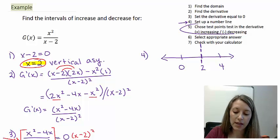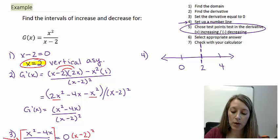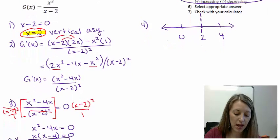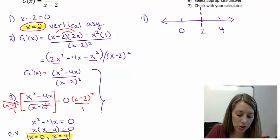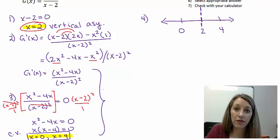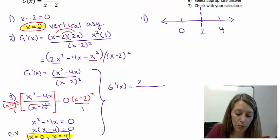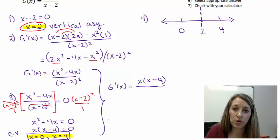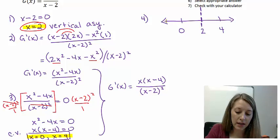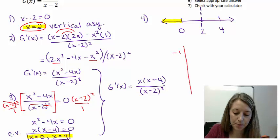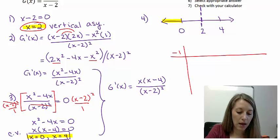Now we need to test our intervals for positives and negatives. Remember, we test these in the derivative, and the factored form is the easiest. So I'll write my derivative in factored format — the numerator x times x minus 4, over x minus 2 squared — since it makes test points easier to substitute in. For my left interval, I need to test something between negative infinity and 0, so let me test negative 1.